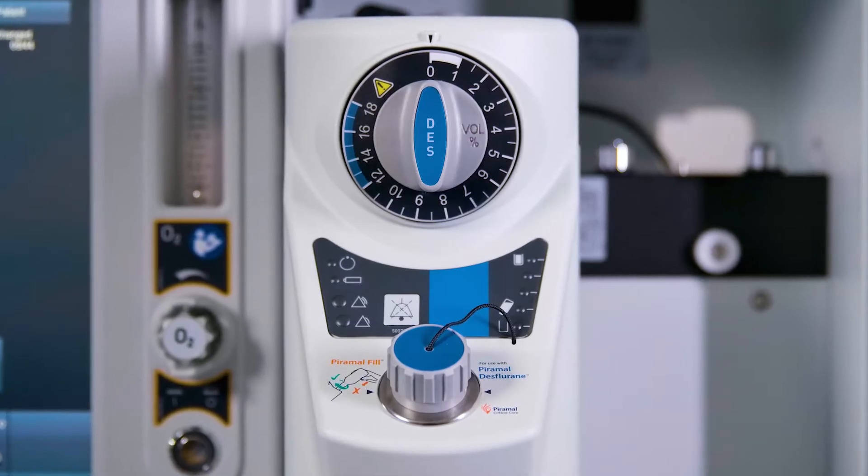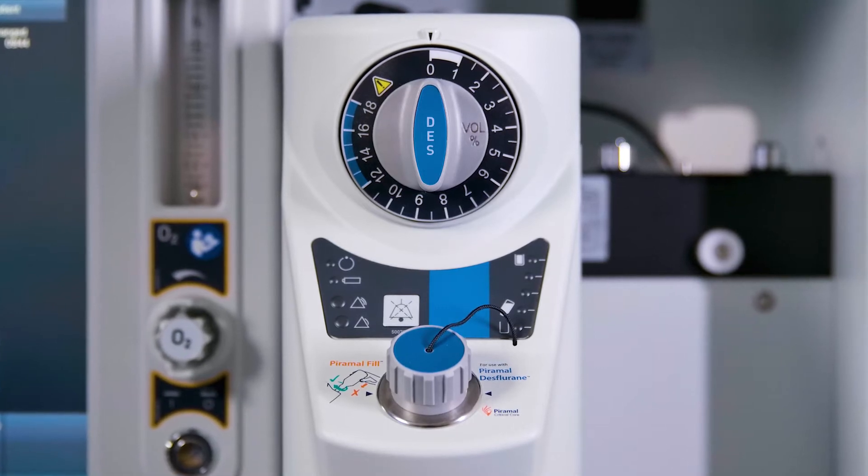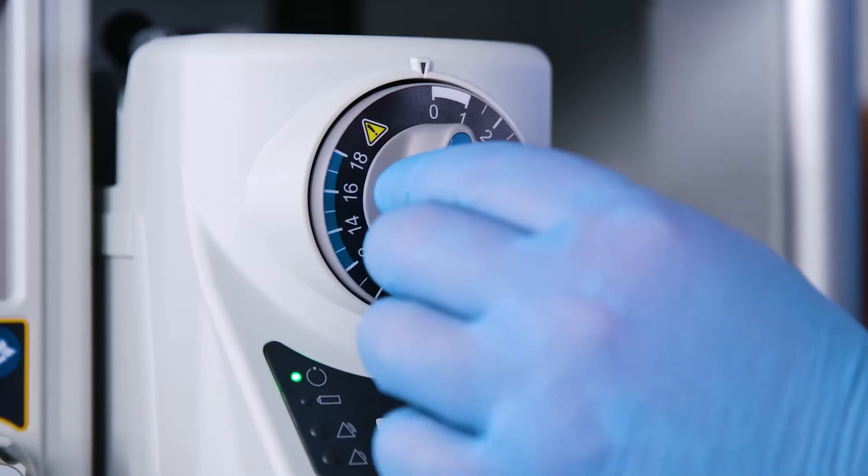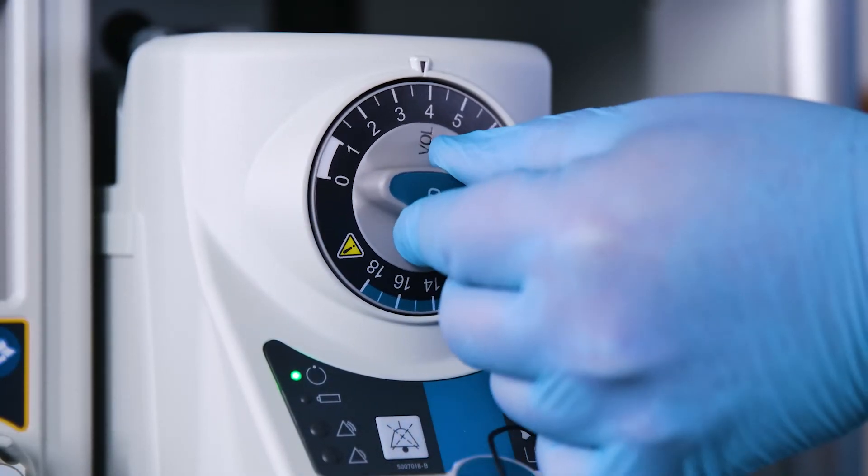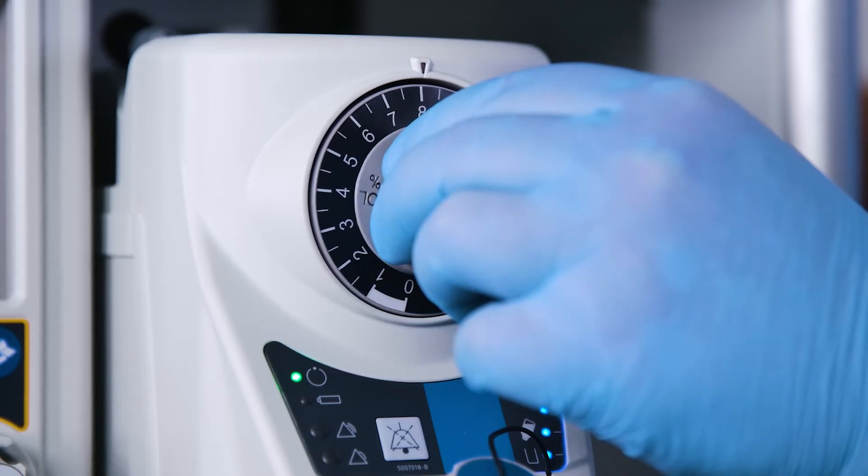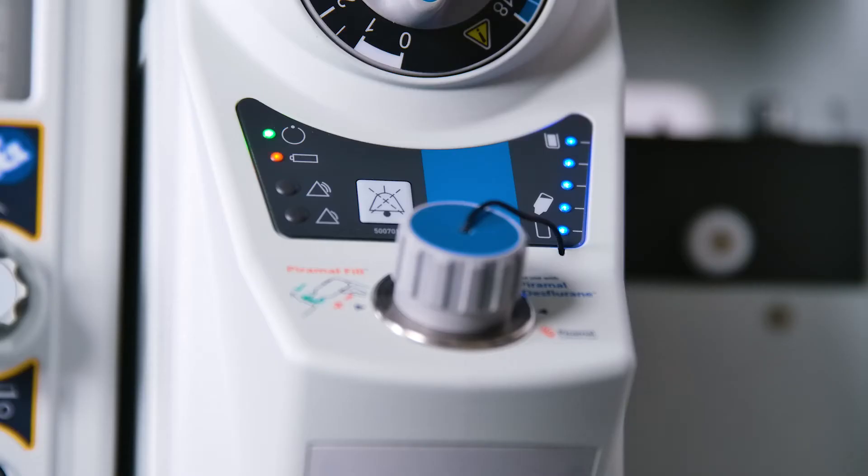The Pennon Sigma EVA anesthetic vaporizer is designed for use with desflurane anesthetic agent. The Sigma EVA has a single forward-facing rotary control dial to regulate the vapor concentration delivered. Alarms and status indicators are located on the front of the vaporizer.